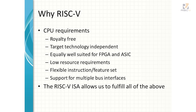What we need for this optimization is a CPU that's royalty-free, can be migrated between all technologies, and is equally well-suited for FPGA and ASIC implementation. It has to be small, with flexible instruction sets and feature sets so we can tune the performance and features to customer requirements. It also has to have a non-specific bus interface — open for any implementation. If we're replacing a CPU with an AHB interface, our CPU has to have an AHB interface; if it's Avalon, it has to have an Avalon interface.